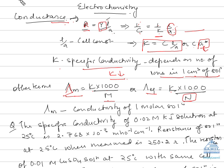Now let's take an example. The specific conductivity of 0.02 molar KI solution at 25 degrees Celsius is given as 2.78768 × 10⁻³. The resistance of this same solution when measured is 2250.2 ohm. We also have another solution: the resistance of 0.01 molar copper sulfate within the same cell at the same conditions is 8331 ohm.